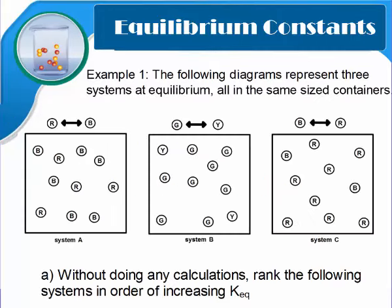In this first example, all the diagrams represent systems at equilibrium. They're all in the same sized containers. So without doing any calculations, rank the following systems in order of increasing Keq. Remember that increasing Keq should be smallest to largest. And the larger your Keq, the more products you have. Pause the video and try to reason that out. Restart when you have an answer.